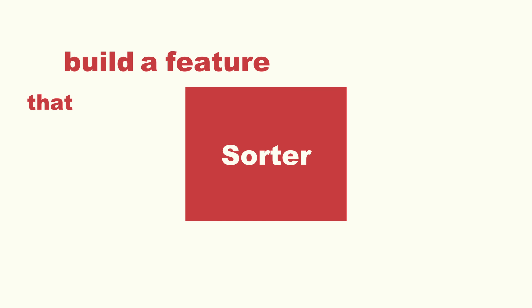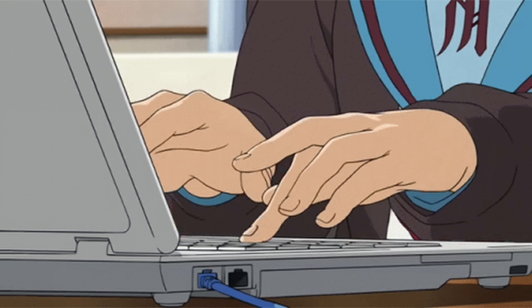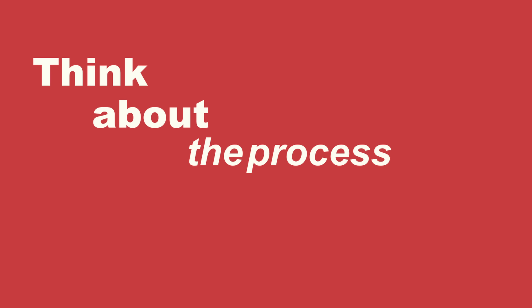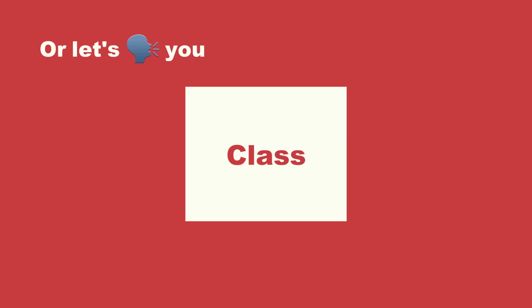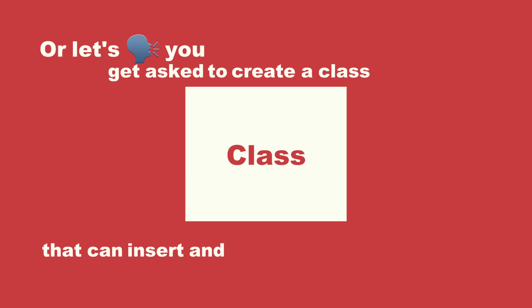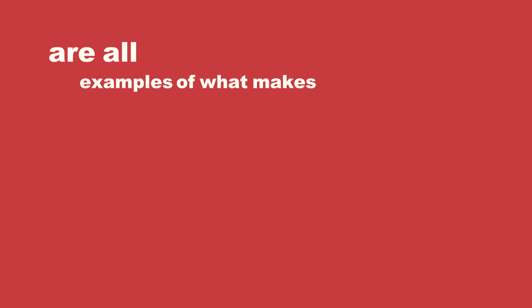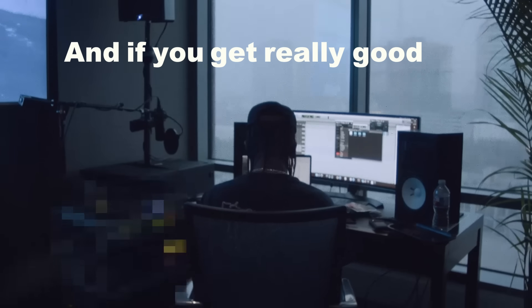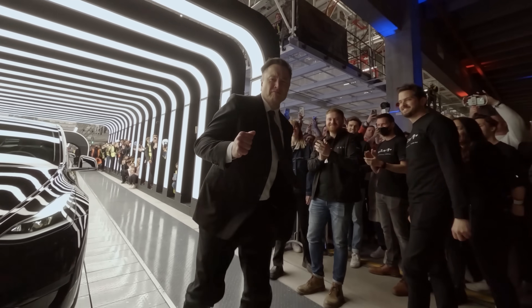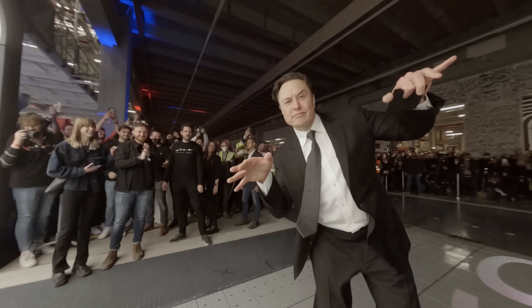For example, if you're asked to build a feature that sorts a list of items, instead of immediately writing code, think about the process. What's the most efficient way to sort this data? What are the tradeoffs between different sorting algorithms? Or if you get asked to create a class that can insert and remove elements, think about which data structures will best fit your specific constraints and specifications. These are all examples of what makes a good programmer — knowing what to use and when to use it. If you get really good at understanding these processes, figuring out how to apply it in code will become 100 times easier, because all you have to do is convert your process into the specifics of whatever language you're using.